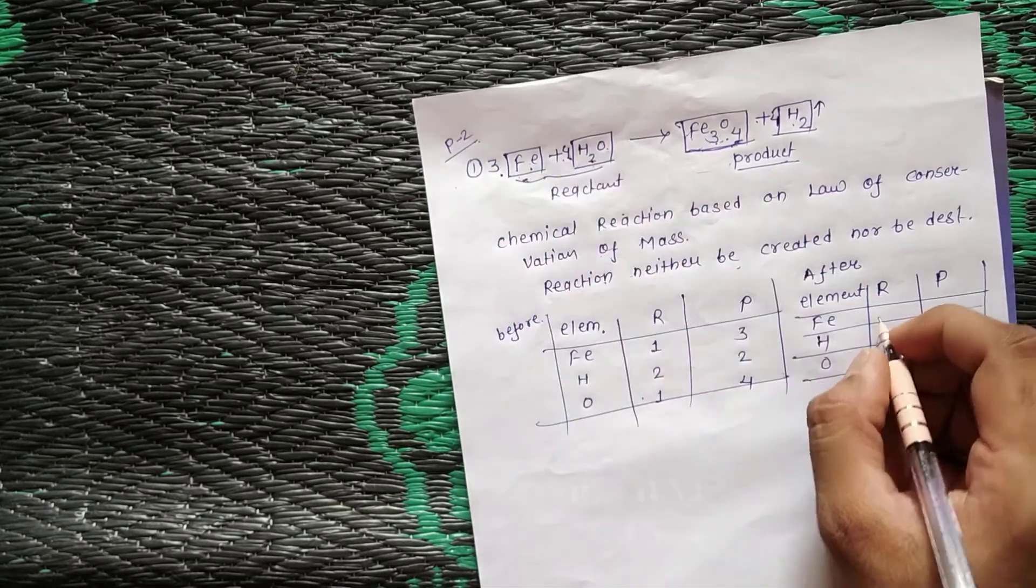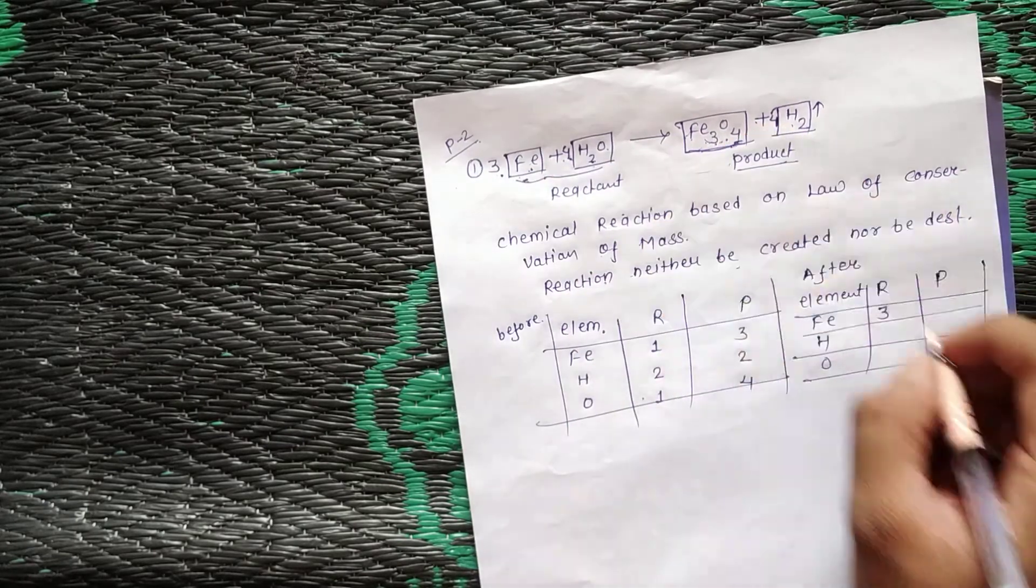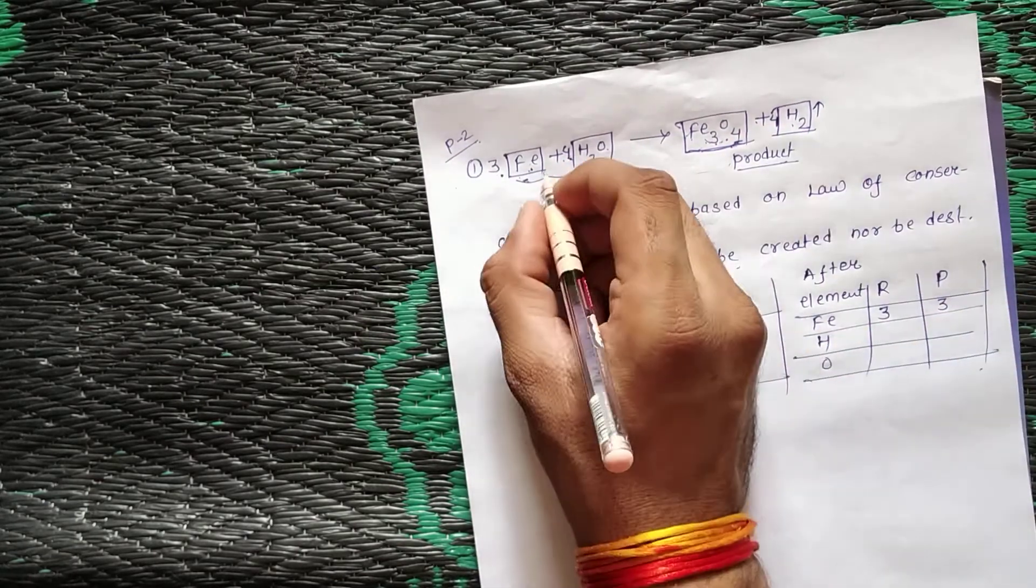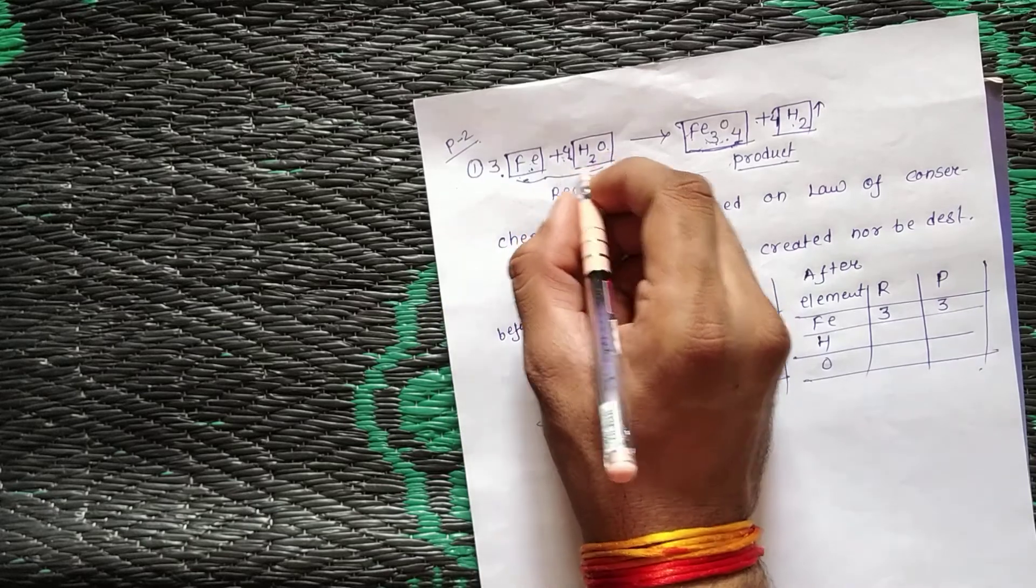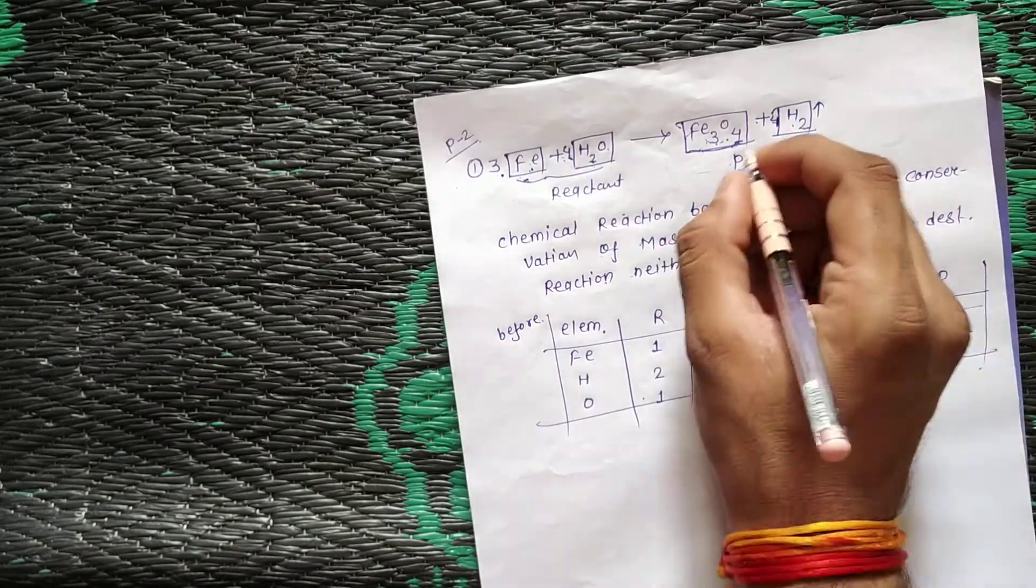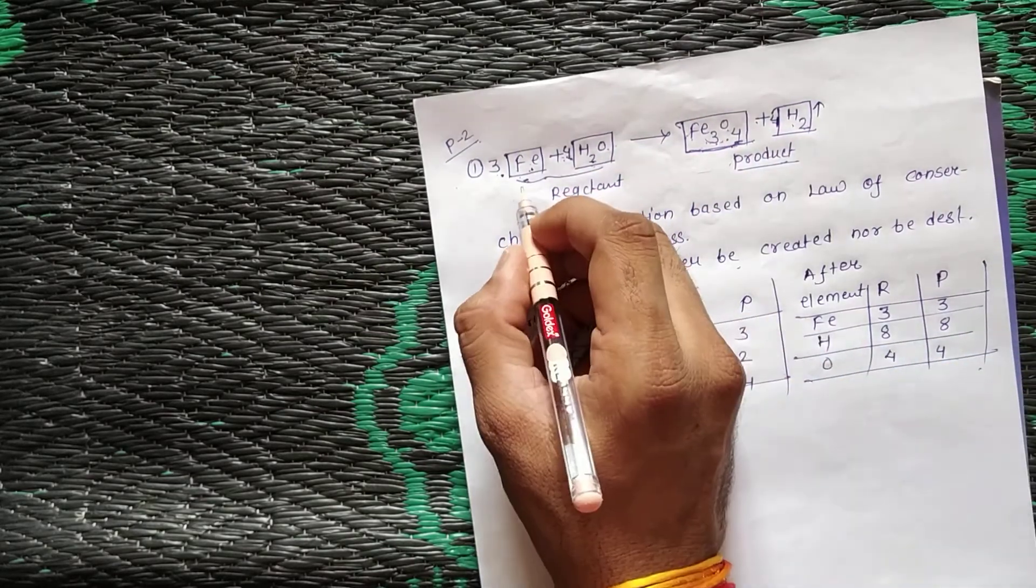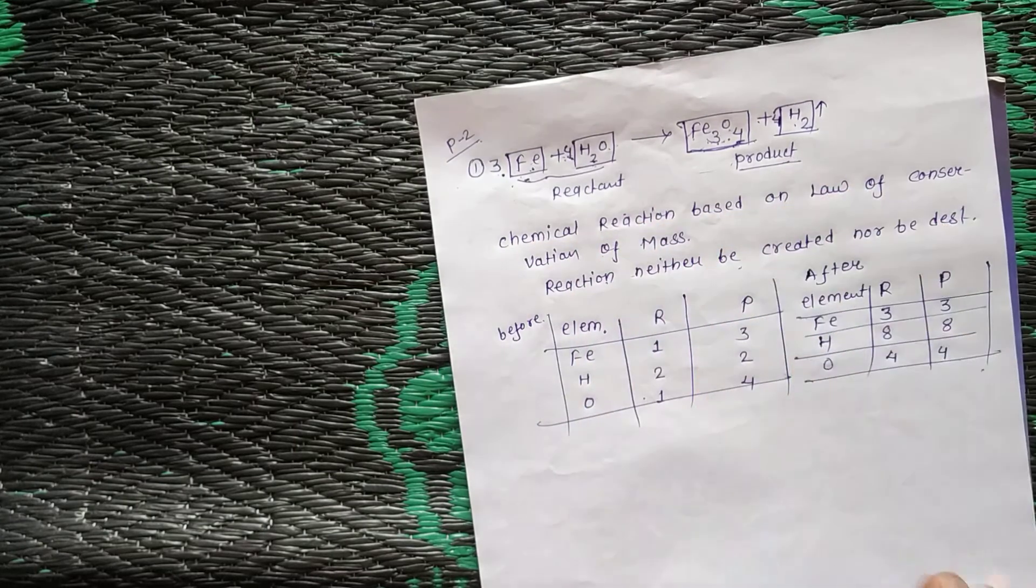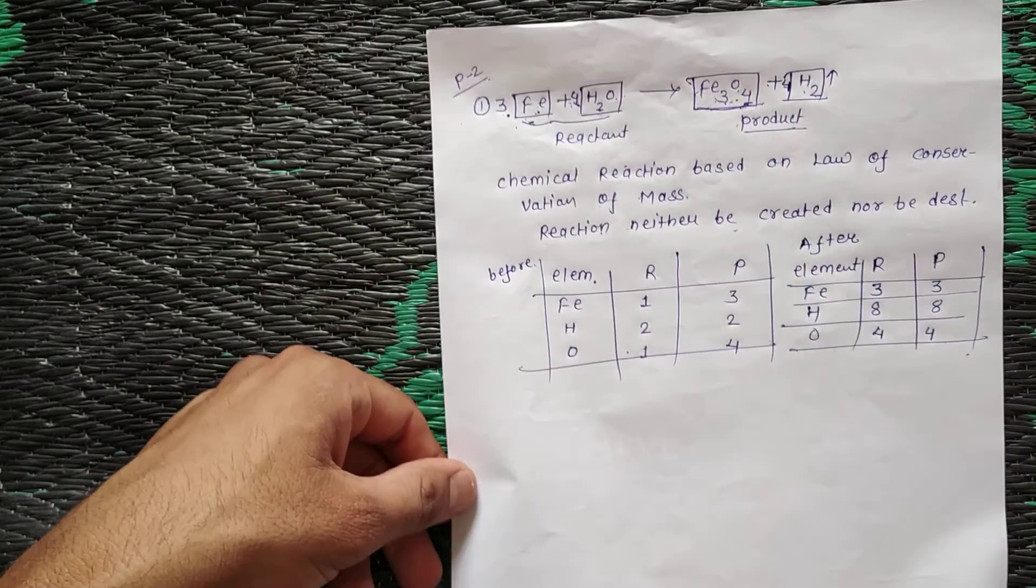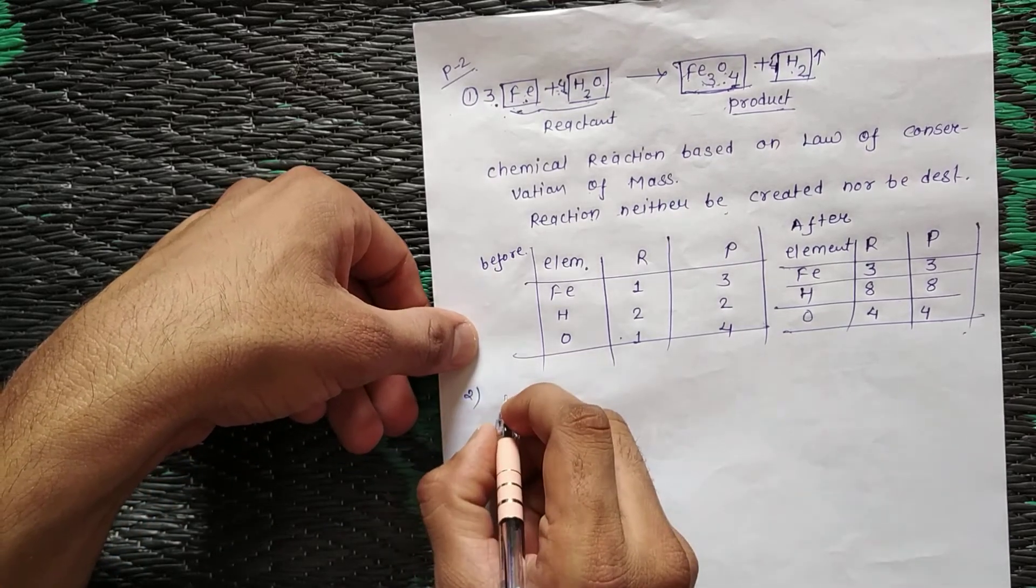Here we have three iron atoms, converting to three iron in the product. Then for hydrogen, four becomes eight hydrogen atoms. For oxygen, we have four oxygen atoms balanced. This completes the chemical reaction. We take one more example.